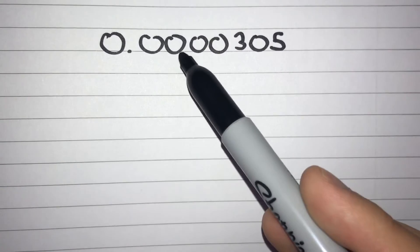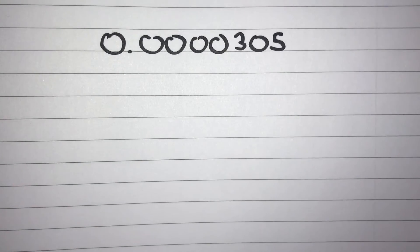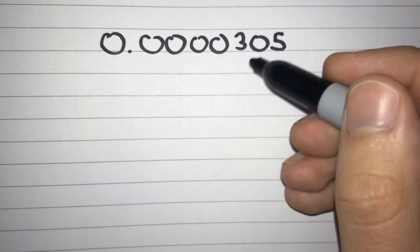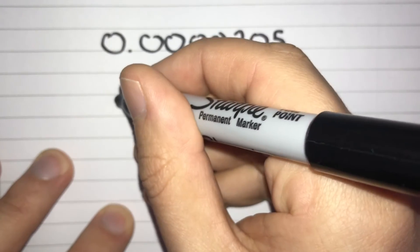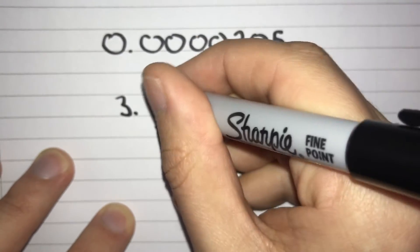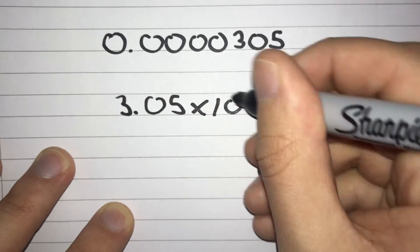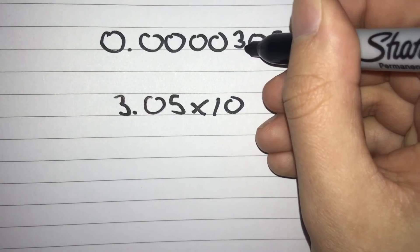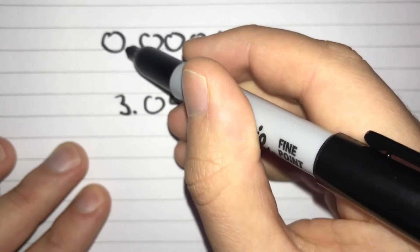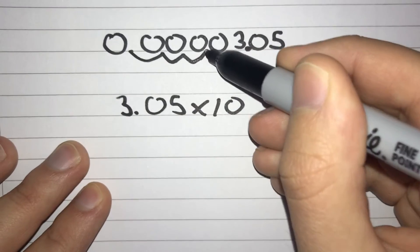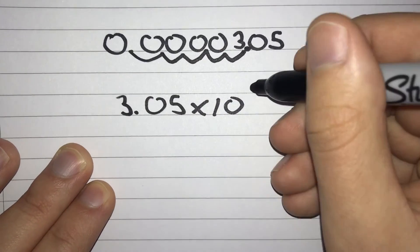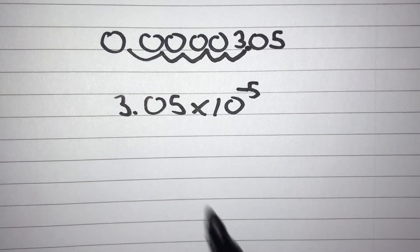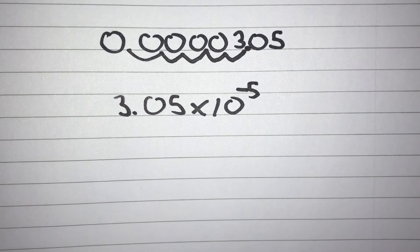This time we've got 0.0000305. Again we put our decimal point after our first significant figure — we ignore all the zeros and put it after this 3 — so our number between 1 and 10 is 3.05. Our decimal point started here and is now just after this 3. Counting the spaces: 1, 2, 3, 4, 5 spaces. So our power is negative 5, and our answer would be 3.05 times 10 to the power of negative 5.